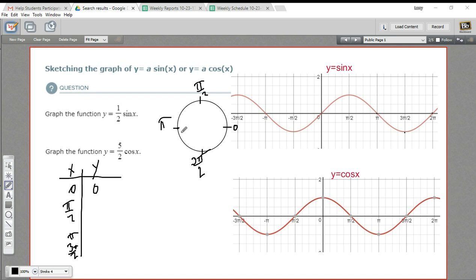Now at π over 2, the sine is up to 1. So the sine of π over 2 is 1. And then I multiply that by 1 half. 1 half times 1 is 1 half. So we're going to have the point π over 2, 1 half on this graph. At π, we're at 0 again. So this is going to be 0. And at 3π over 2, we're at negative 1. Negative 1 times 1 half is negative 1 half.